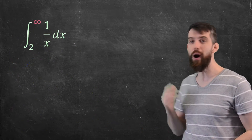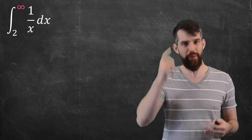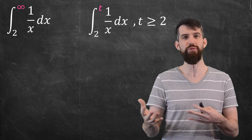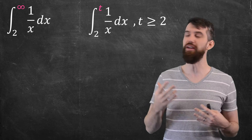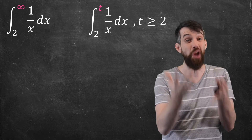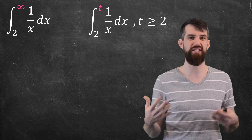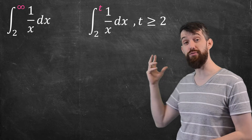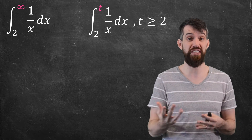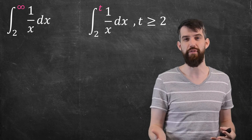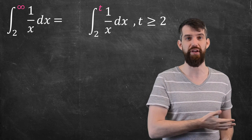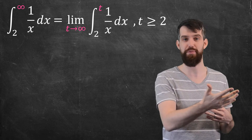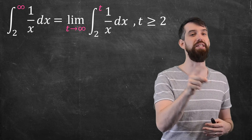Let's focus on the integral from 2 up to infinity first. The problematic side is the infinity. So instead, consider the integral of 1 over x from 2 to some value t, where t is just a number greater than 2 — maybe 7, 100, a million, or a trillion. Since t is always a finite number, we can compute this integral. It becomes a function of t, and we can then take its limit as t goes to infinity. That is how we define the improper integral from 2 to infinity.